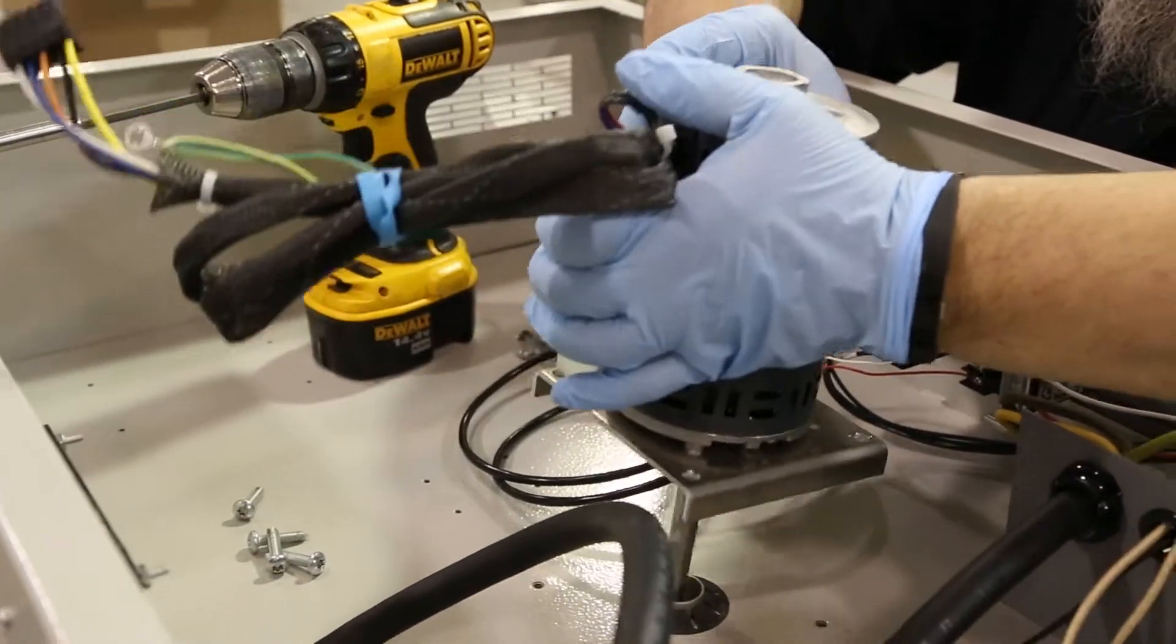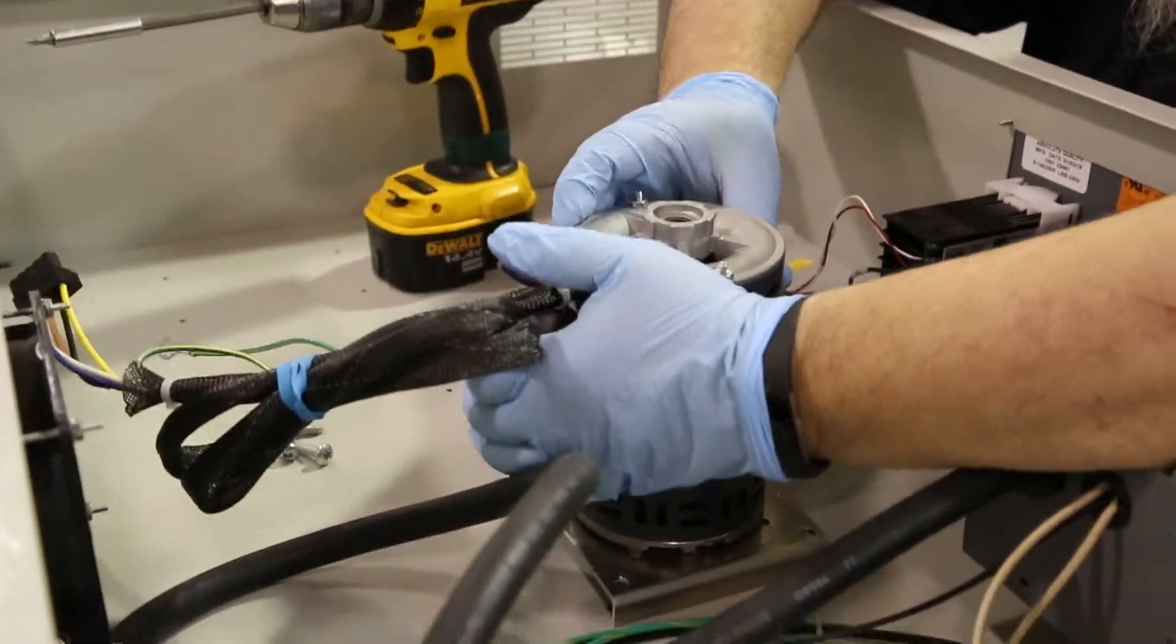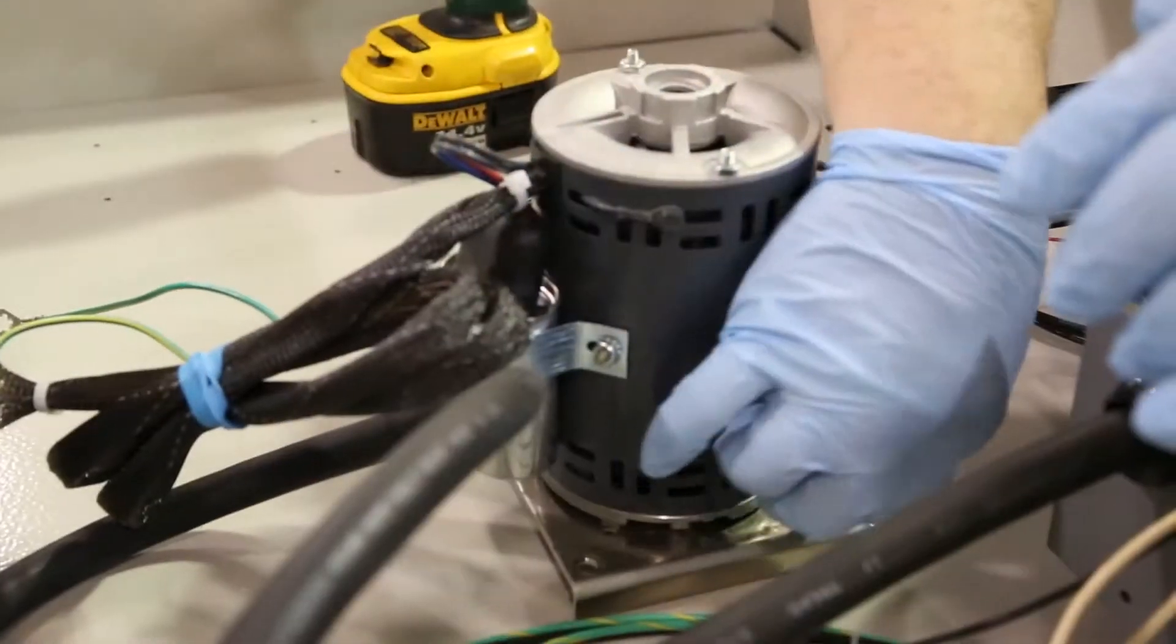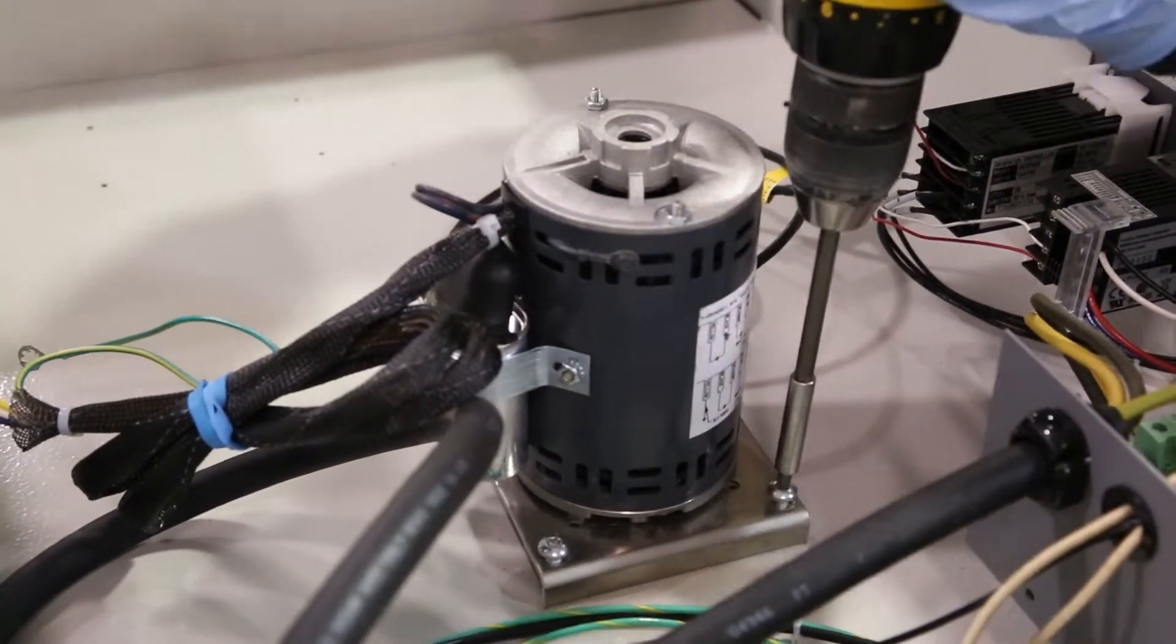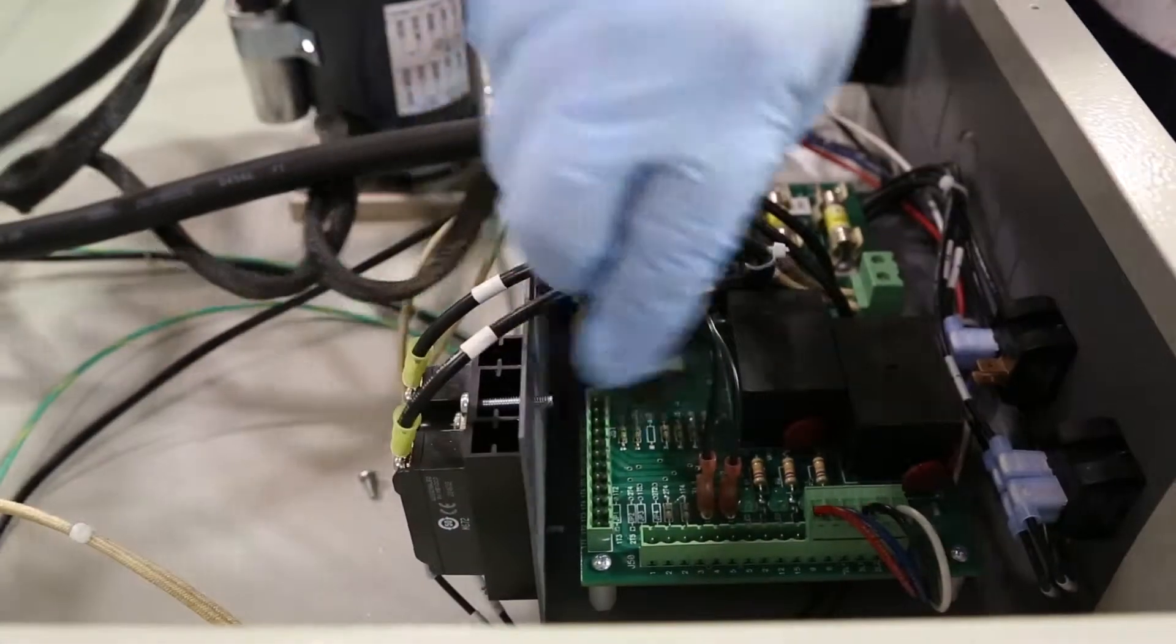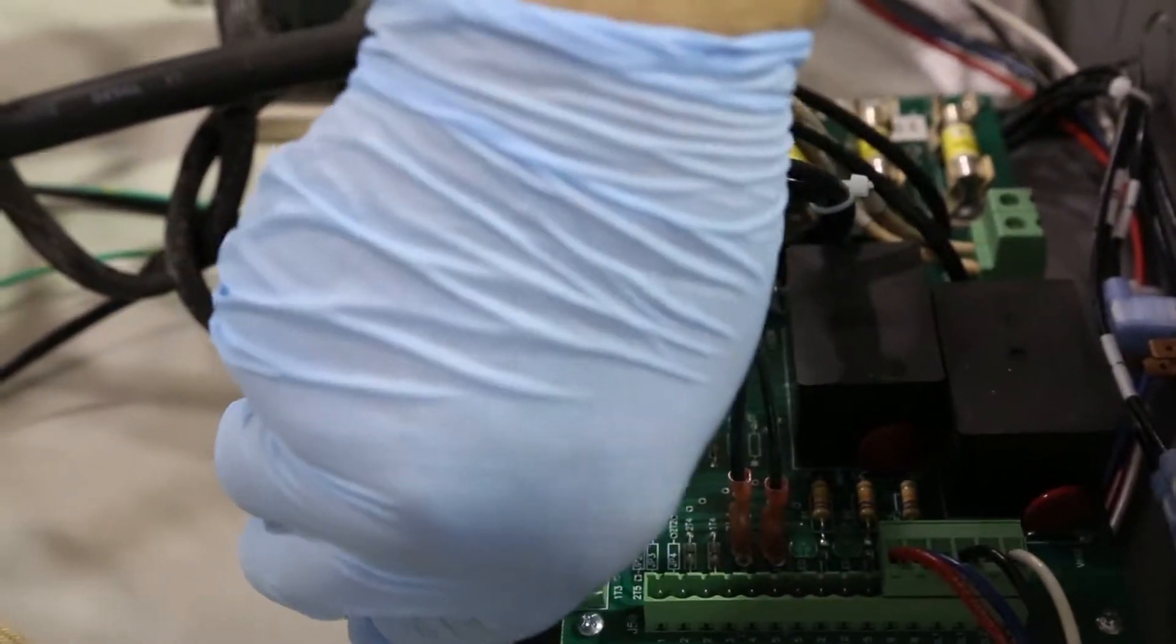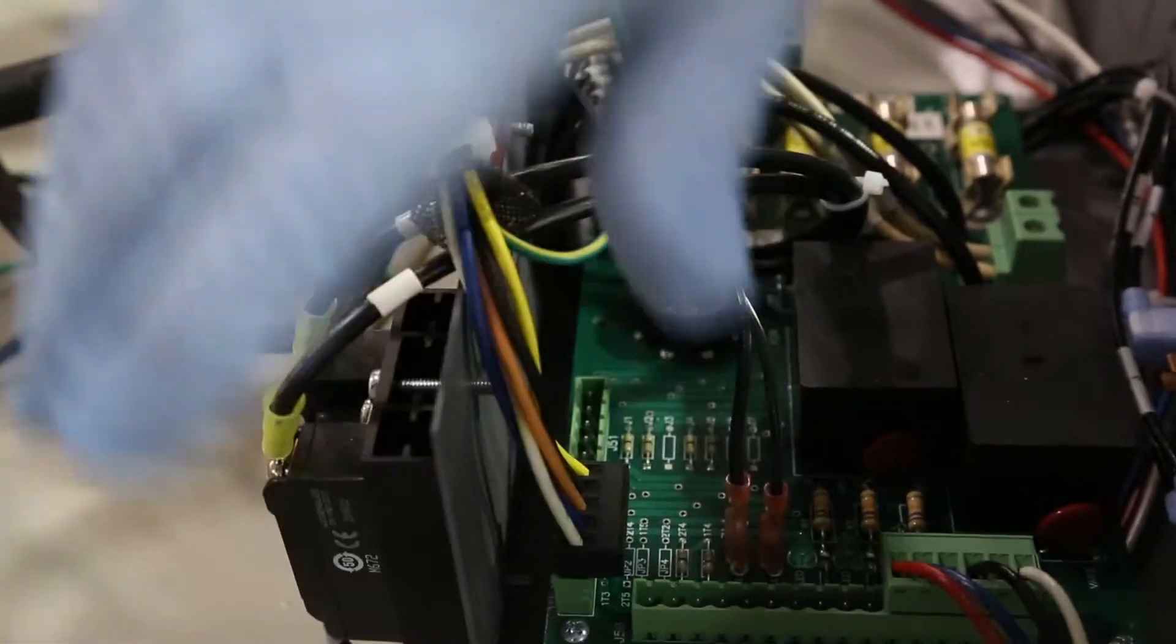Set the motor back in place and secure to the oven with four fasteners. Connect the motor lead to the controller in the exact position you removed it. Refer to electrical schematic if you are unsure.